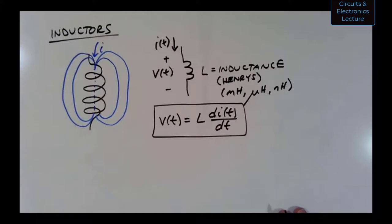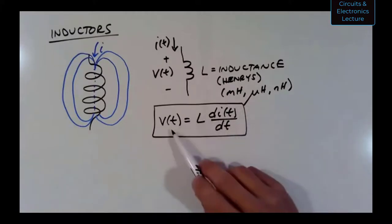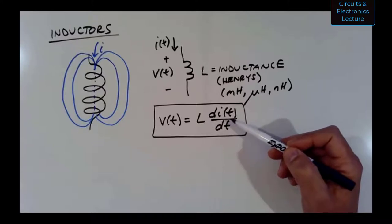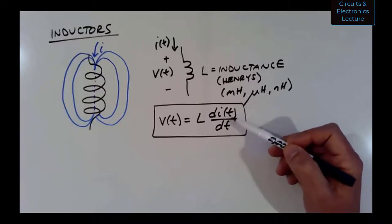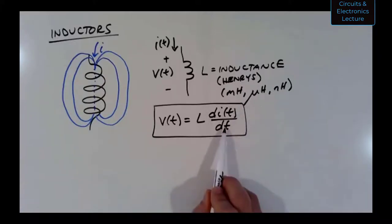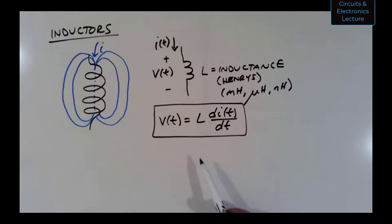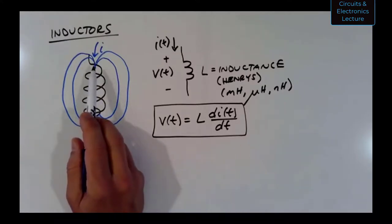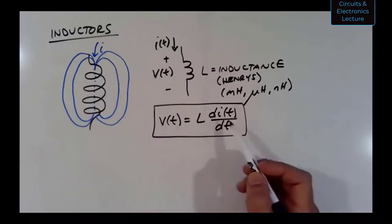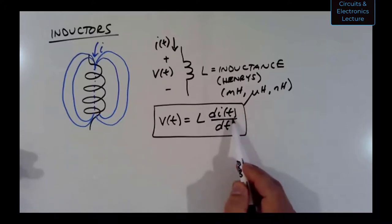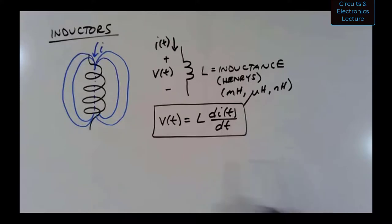The big takeaway: a voltage is induced when current changes because the magnetic field is changing through the coil. When current is constant — no changing magnetic field — the derivative is zero and voltage is zero. So with DC current through a coil, the voltage across it is zero. As soon as you try to change that current, the slope times the inductance gives you the induced voltage. This is another basis for frequency-dependent filters.